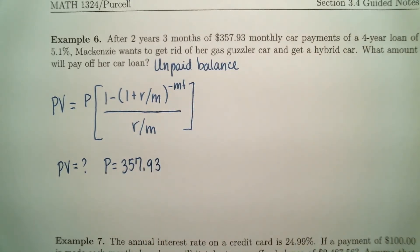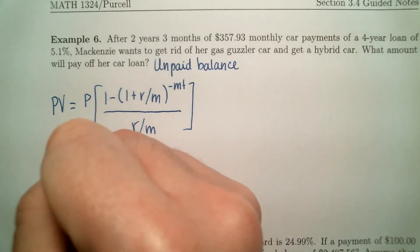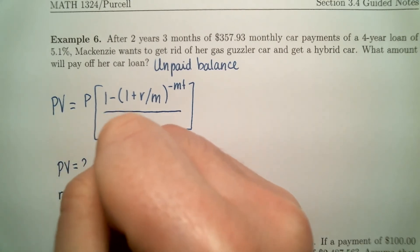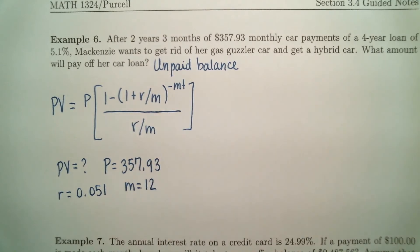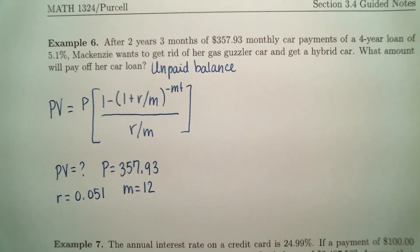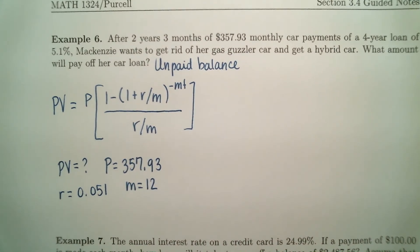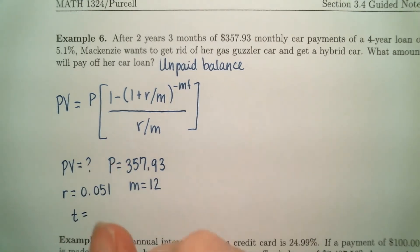The R value is 5.1%, so 0.051. M is 12 because she's making monthly payments. That coincides with how often the interest is compounded. Time is going to be the tricky part here. Remember with unpaid balance, you have to use remaining time. So time has to be in years.